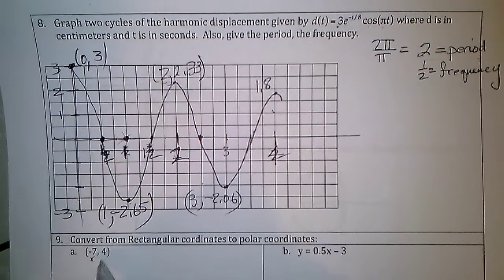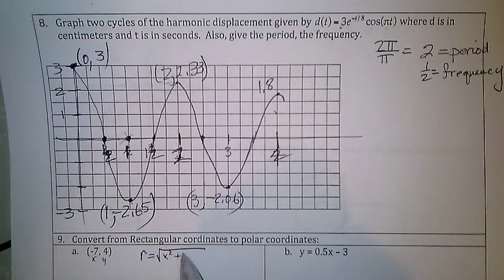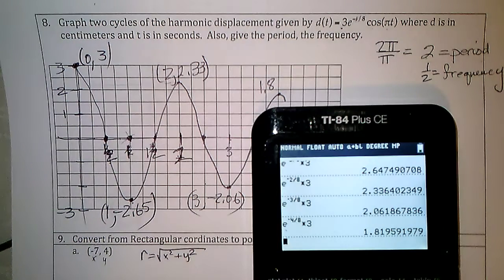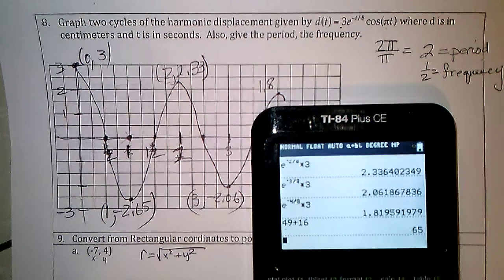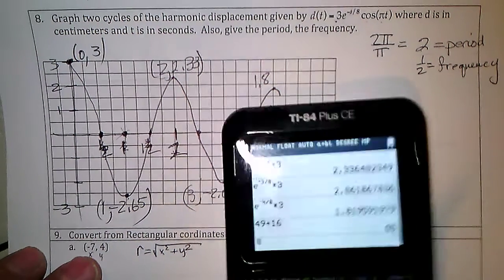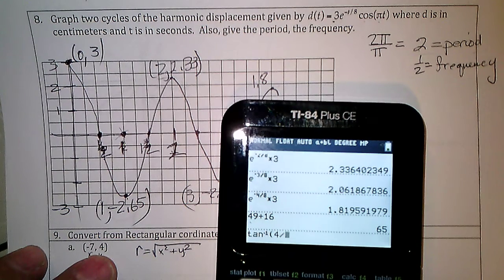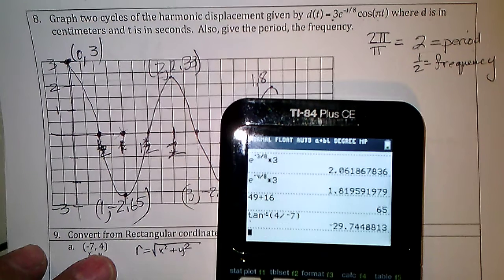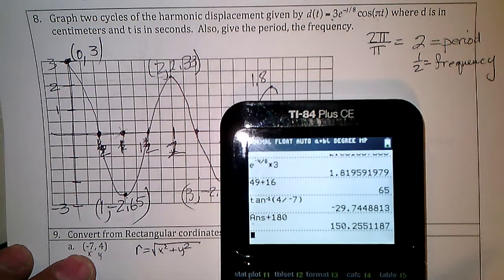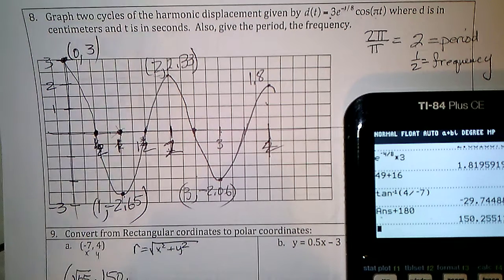Convert to rectangular: if this is x and y, r equals the square root of x² + y², which is the square root of 49 + 16 = 65. So r = √65. The angle is the tangent inverse of y divided by x, but x is negative so I have to add 180°, giving an angle of 150.3 degrees.